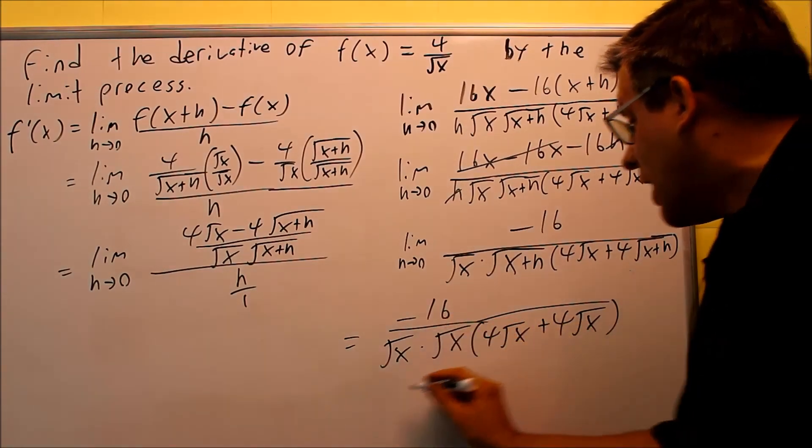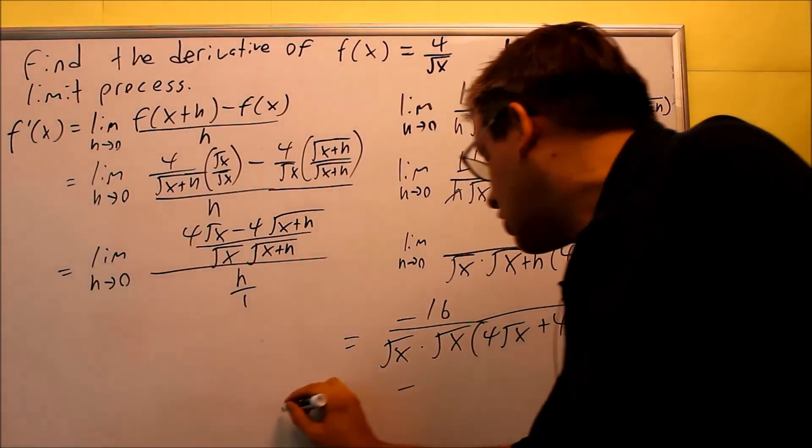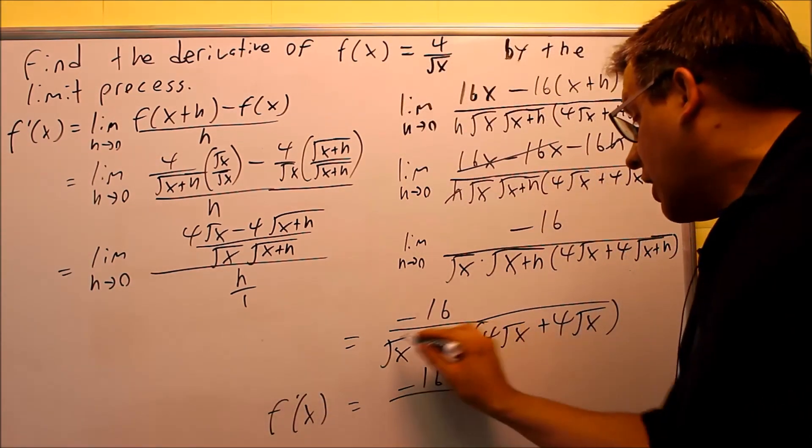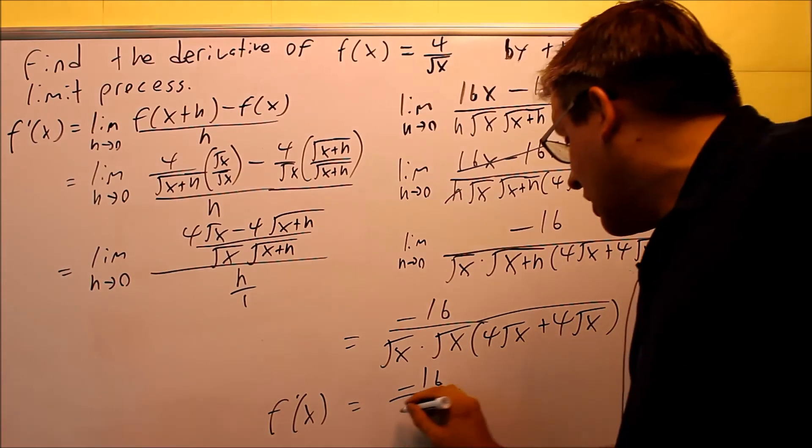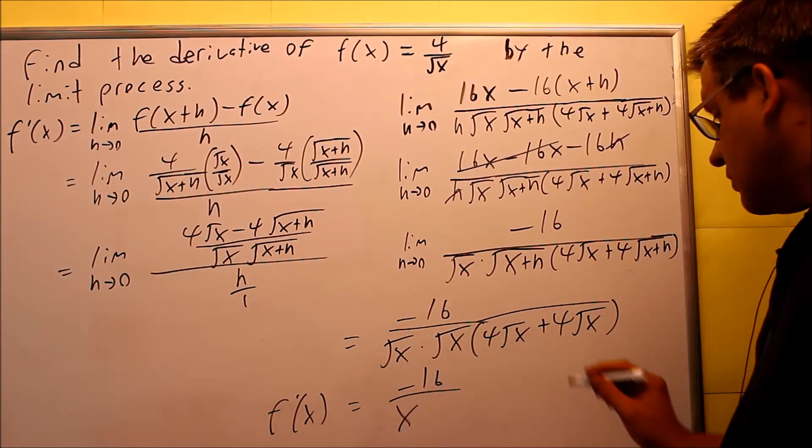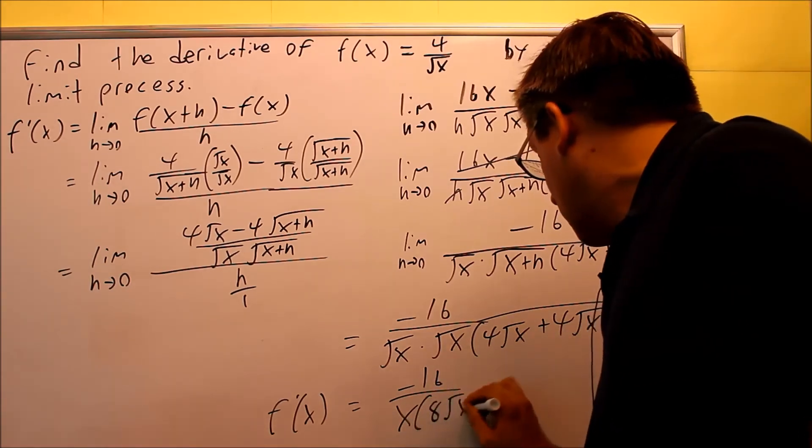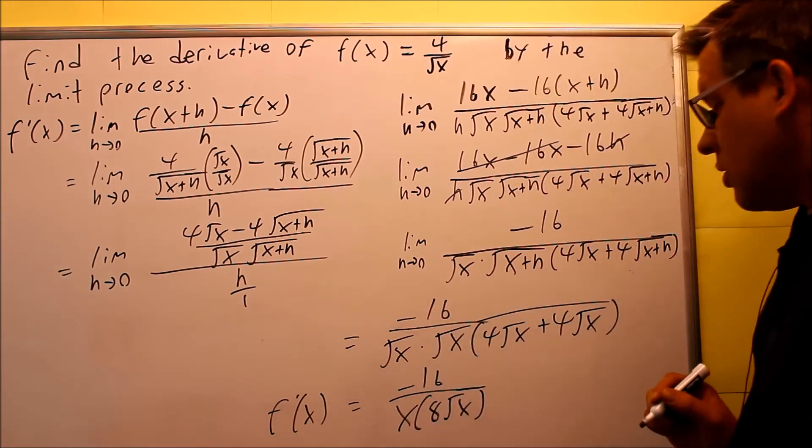So when I simplify that, I get, so this is going to be my final answer here, negative sixteen. Alright, now these two when I multiply, I am going to get x. When I add these together, I will get eight square root of x.